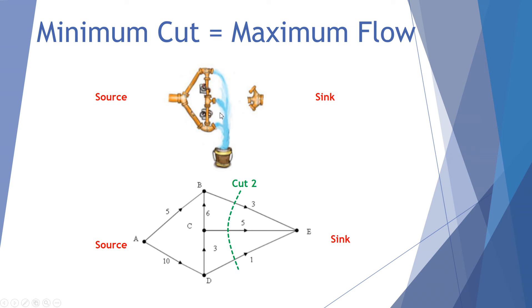Let's look at cut 2. This is another way in which we completely cut off water flowing from the source to the sink. If we were to slice right through the top here, effectively none of this water coming through from the source will reach the sink.